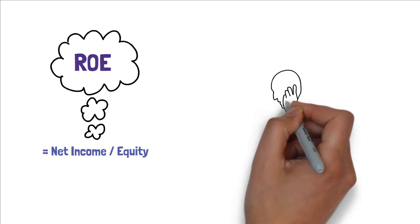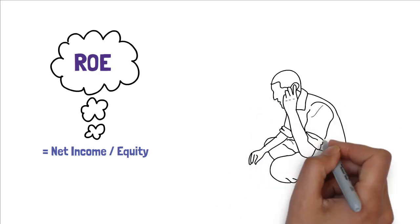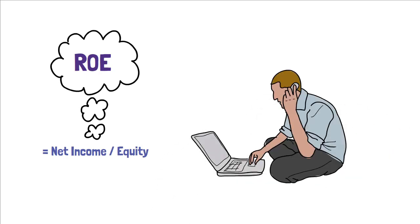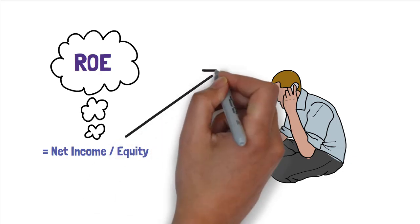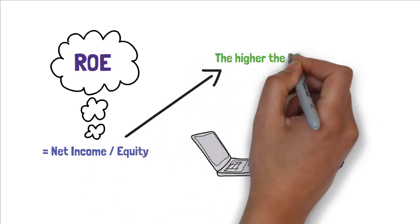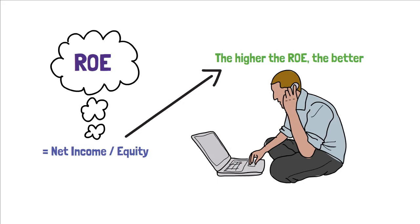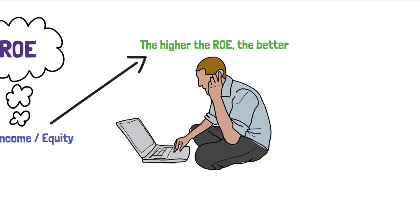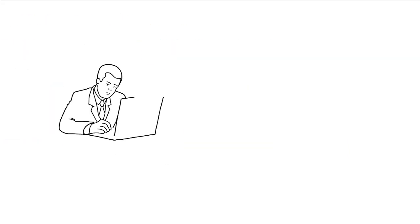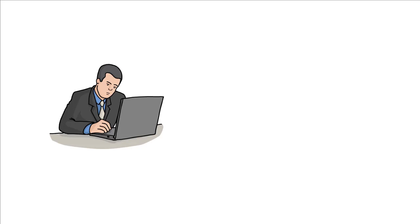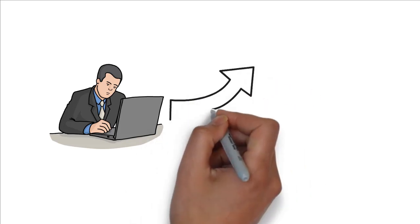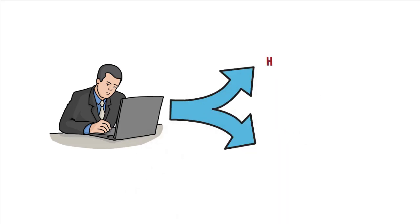Stockholders expect to earn a return on their money and this ratio tells how well they are doing in an accounting sense. In general, the higher the ROE, the better it is. However, to get a better picture of the firm, the ROE ratio of a company should be compared to its past ROE ratios or industry average ROE.